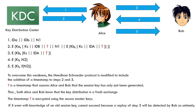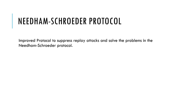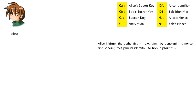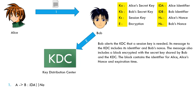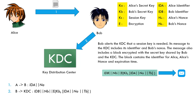Next, we will talk about the improved protocol to suppress replay attacks and solve the problems in the Needham-Schroeder protocol. Alice initiates the authentication exchange by generating a nonce and sending that plus its identifier to Bob in plaintext. Next, Bob alerts the Key Distribution Center that a session key is needed. Its message to the Key Distribution Center includes its identifier and Bob's nonce. The message also includes a block encrypted with the secret key shared by Bob and the Key Distribution Center. The block contains the identifier for Alice, Alice's nonce, and an expiration time.